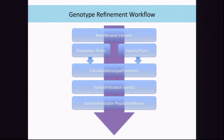Here's an overview of the tools in the genotype refinement workflow. We start with recalibrated variants from the VQSR, then apply population priors and family priors if we have data for that. We put those into the calculate genotype posteriors tool, which is relatively new. Then we use variant filtration to remove genotypes with low genotype qualities. And finally, as an example of a downstream analysis, we tag possible de novo mutations in trios.